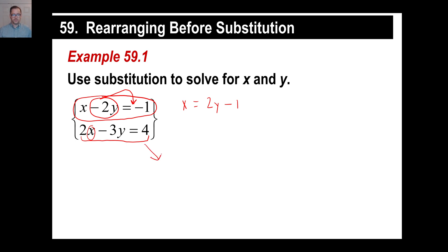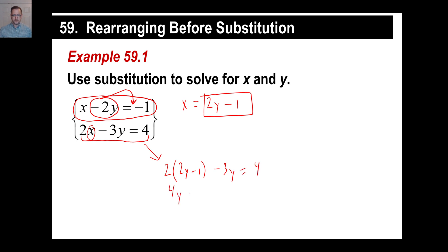Now we have something to substitute into the bottom equation for x so we can solve for y. Rewrite the bottom equation: 2 times (2y minus 1) minus 3y equals 4. So 2 times 2y is 4y, and 2 times negative 1 is negative 2. So 4y minus 2 minus 3y equals 4. Then 4y minus 3y is y, giving y minus 2 equals 4. Add 2 to both sides, and y equals 6.